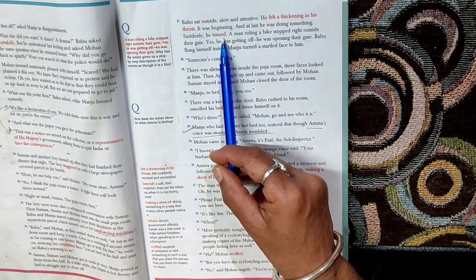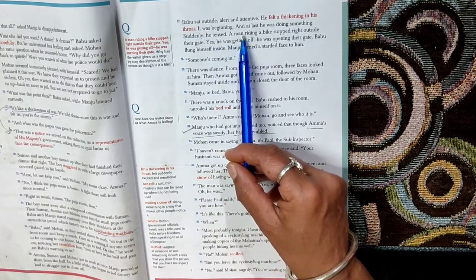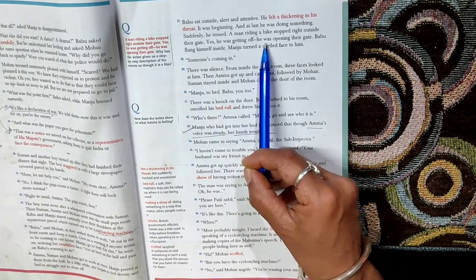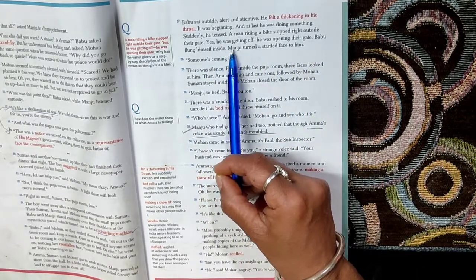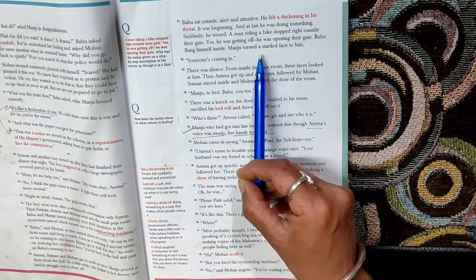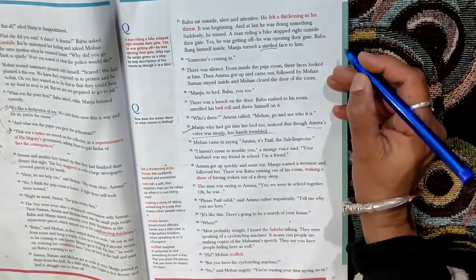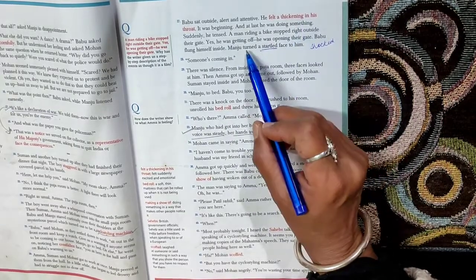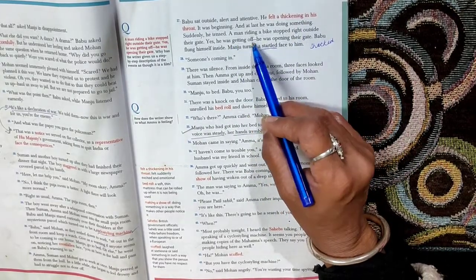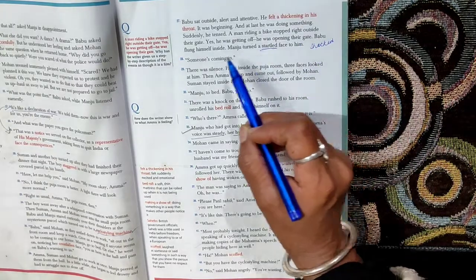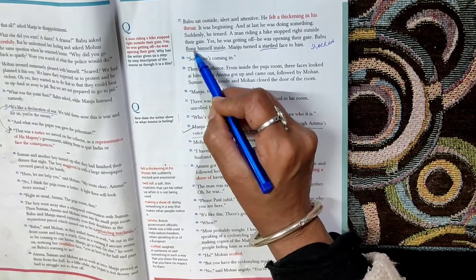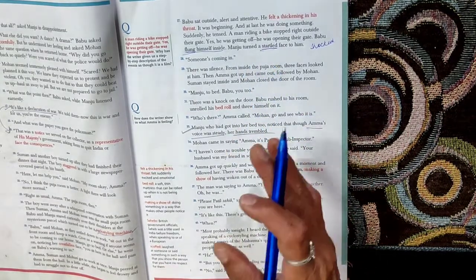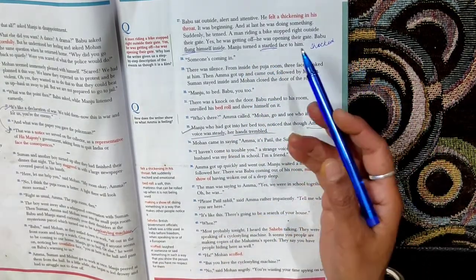Suddenly he tensed. Something is there that tenses him. And what is there? A man riding a bike stopped right outside their gate. Yes, he was getting off. He was opening their gate. Babu flung himself inside. Manju turned a startled face to him. Startled means shocked, surprised. There is a man who is on a bike. He stops there, he is getting off, opening the gate. Babu flung himself inside. Flung is immediately. He goes inside to convey the information to Manju.